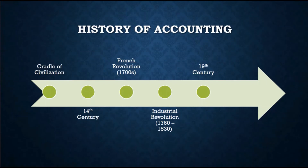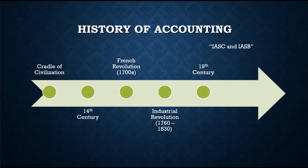The evolution of multinational companies led to international business operations across national borders, with more complicated transactions as goods and services were transferred worldwide. Hence, there was a need to bring a common system of measurement and communication of economic activities. This need was addressed through the creation of the International Accounting Standards Committee, or IASC, in 1973, which developed the International Accounting Standards, or IAS. The IASC was reconstituted in 2001 as the International Accounting Standards Board, or IASB.